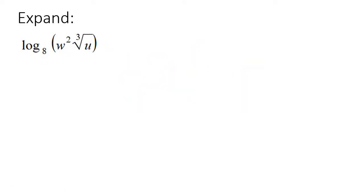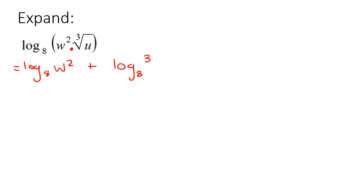Here's our next example — and remember, after this one we're moving on to simplifying instead of expanding. First I would realize that there's a multiply, so that becomes a plus: log₈(w²) plus log₈(∛u).